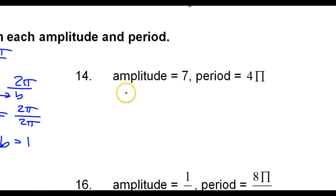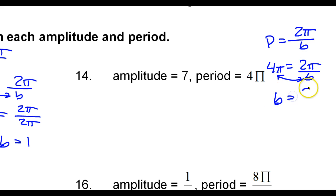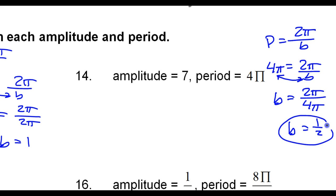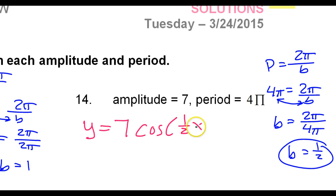Number 14. The period is 2 pi over b. So 4 pi equals 2 pi over b. Swapping gives b equals 2 pi over 4 pi. The pi's cancel, so b equals 1 half. The equation is y equals the amplitude times cosine of 1 half x.